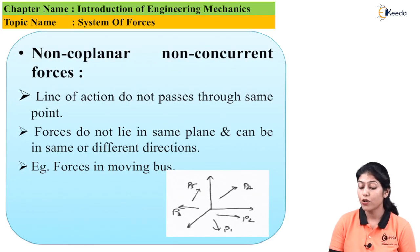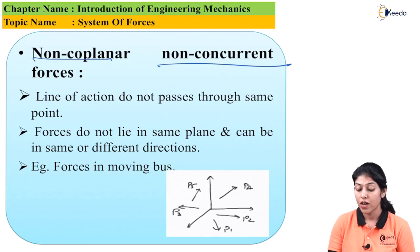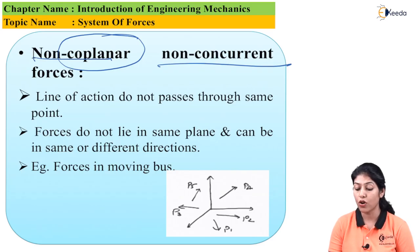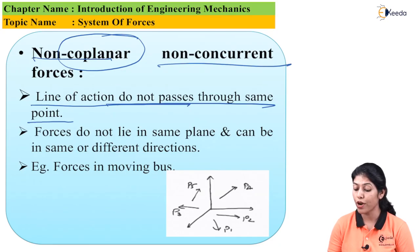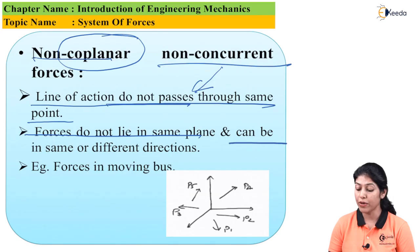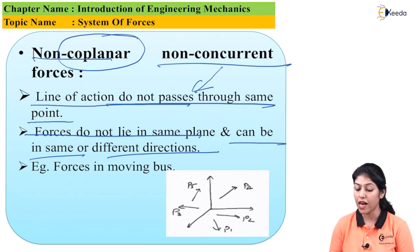Now let's discuss non-coplanar non-concurrent forces. Here the forces are not coplanar — not acting in a single plane — and also non-concurrent, meaning the line of action does not pass through a single point. So this is the combination: line of action of different forces does not pass through the same point, and the forces do not lie in the same plane. The forces can be in the same or different direction. The perfect example of non-coplanar non-concurrent forces is the forces applicable in a moving bus.